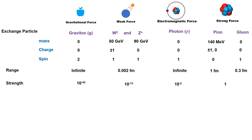The mean lifetime of strong force decays is around 10⁻²⁴ seconds. The lifetime of electromagnetic interaction decays is between 10⁻²⁰ to 10⁻¹⁶ seconds. Due to the least strength of gravitational force, particle decay takes years.